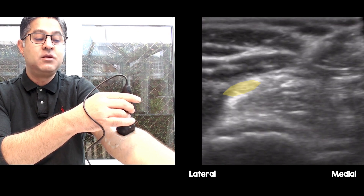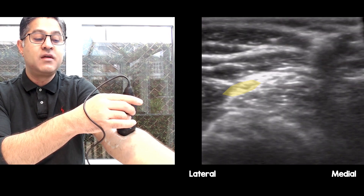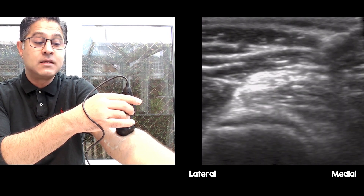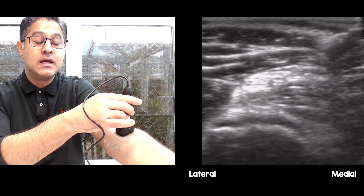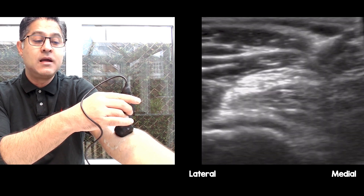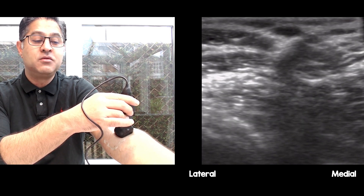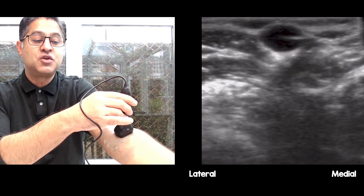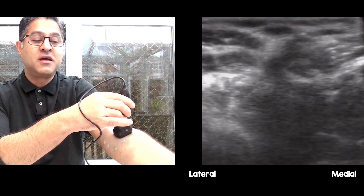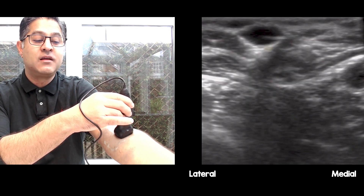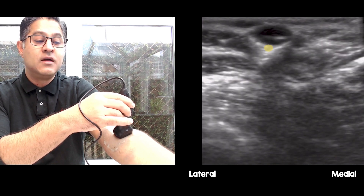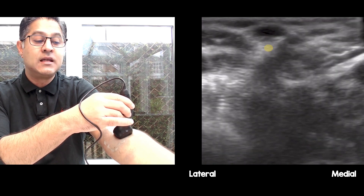I then slide the probe laterally, and as I go laterally I start to see the superficial radial nerve, sandwiched between brachialis and brachioradialis. Now I come back slightly medially on the antecubital fossa and release the pressure — you can then see the cephalic vein.